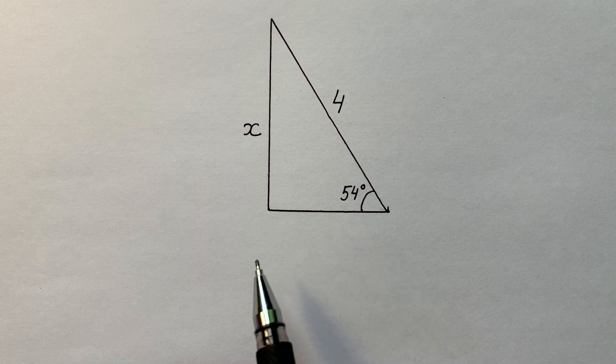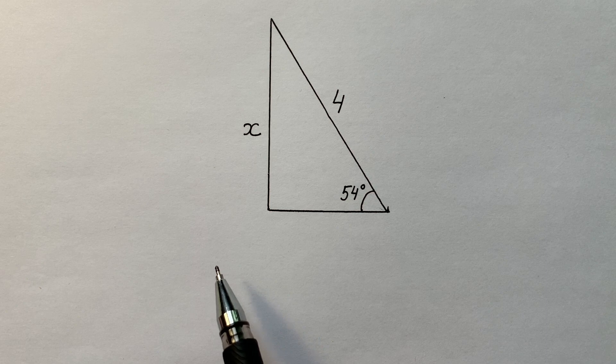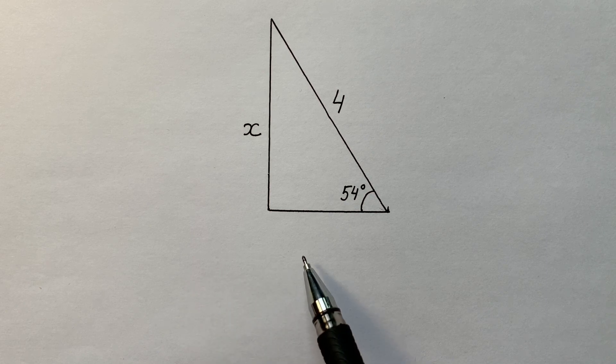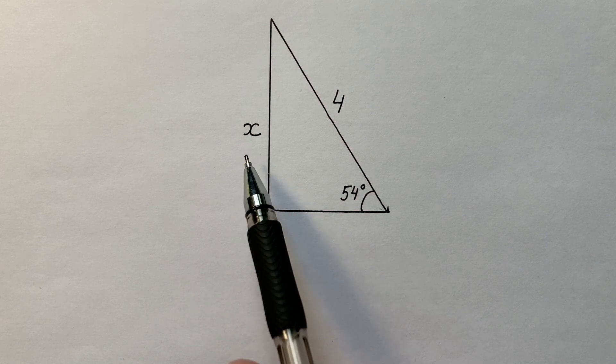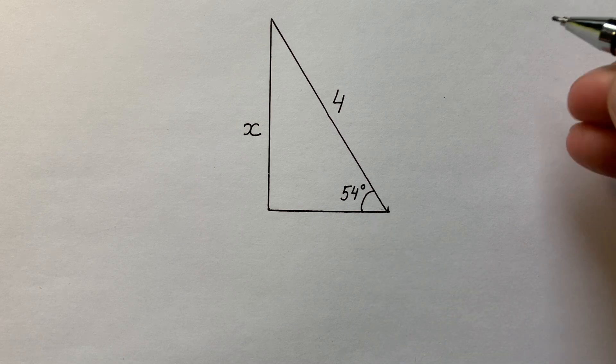Looking at this angle, intuition can tell us that we must use some trigonometric formulas. And if we have to find x, we can find sine of 54 degrees.